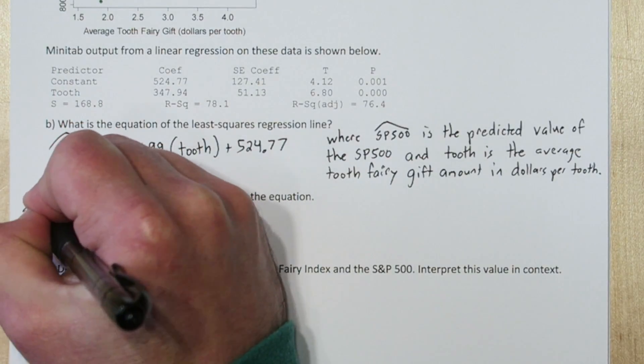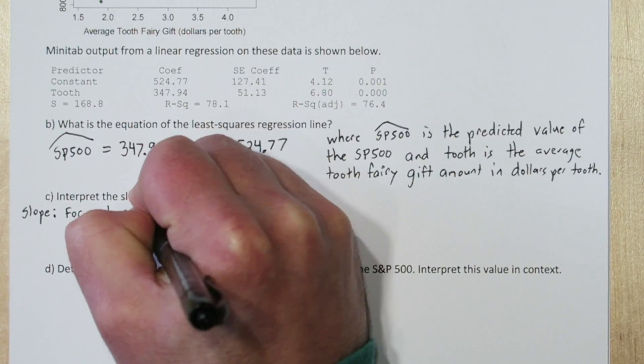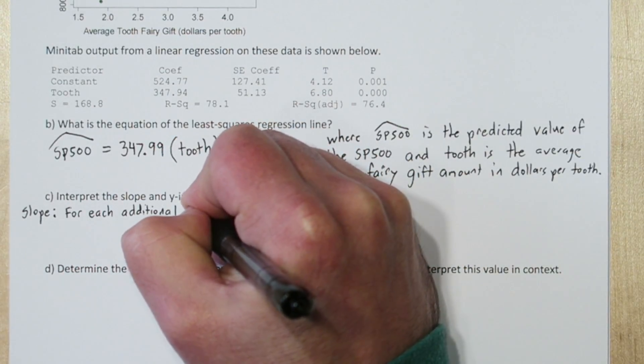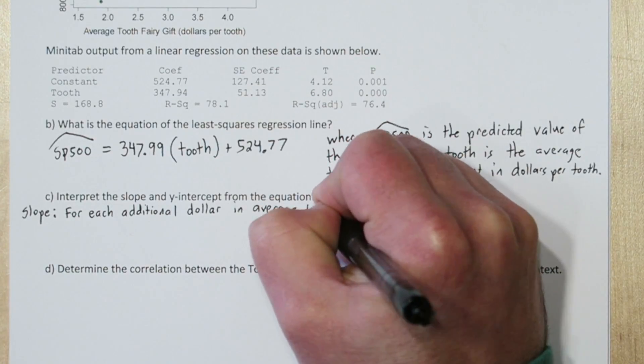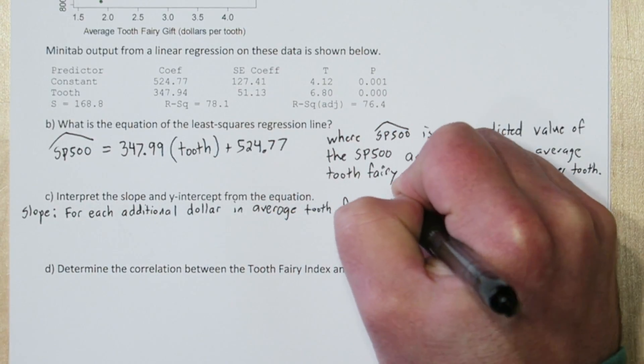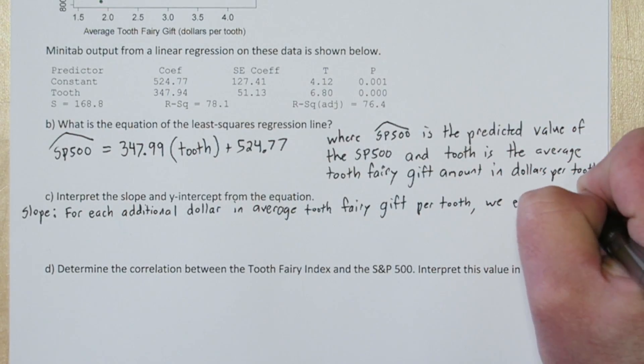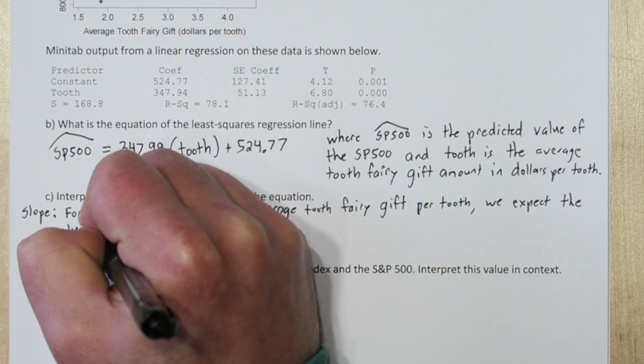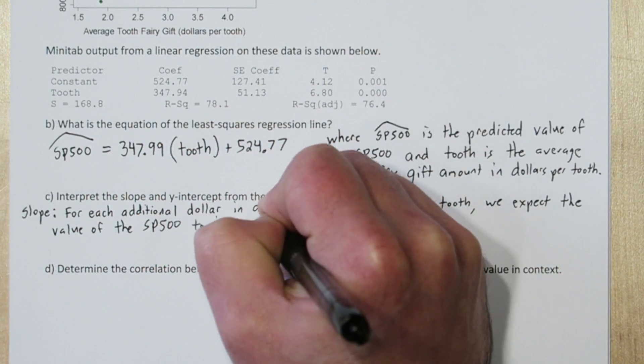We can interpret the slope like this. For each additional dollar in average tooth fairy gift per tooth, we expect the value of the S&P 500 to increase by 347.99. You can see this directly in the equation. Each time tooth increases by 1, we're going to end up adding another 347.99 to our total prediction for the S&P 500.